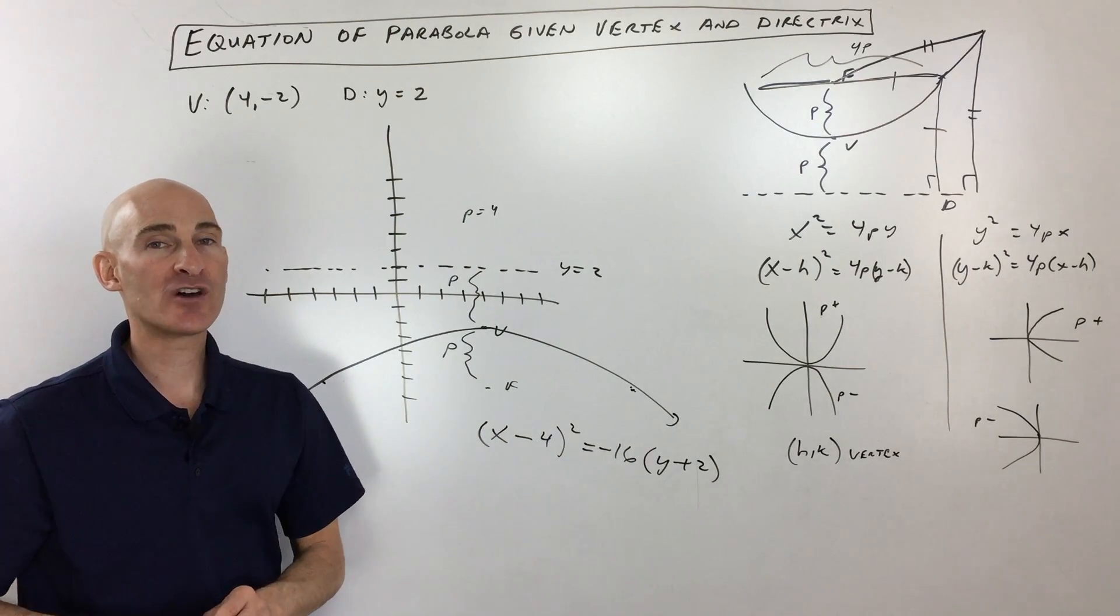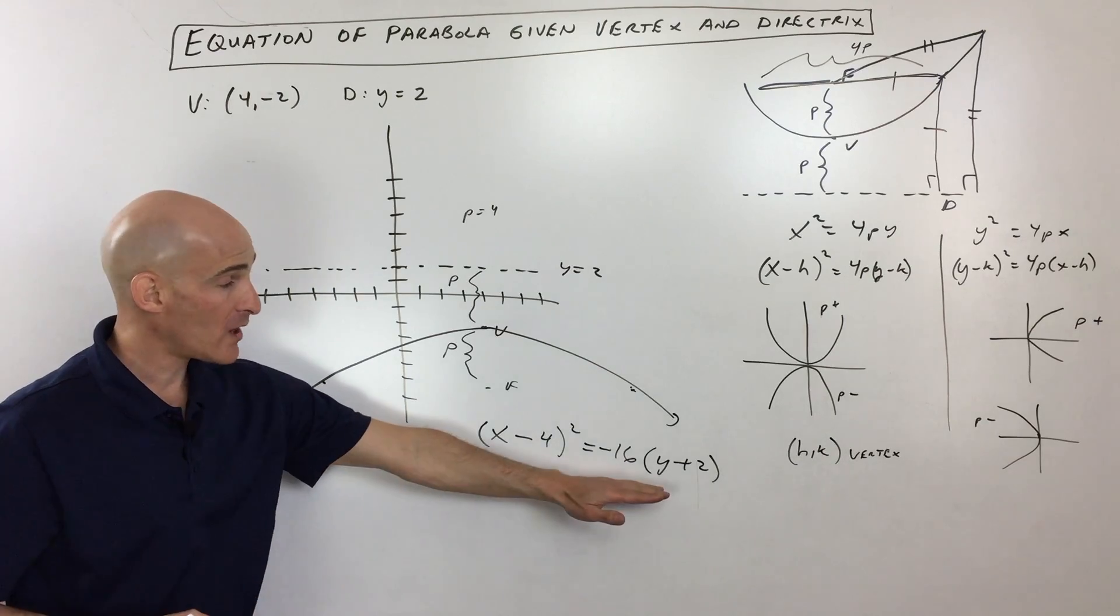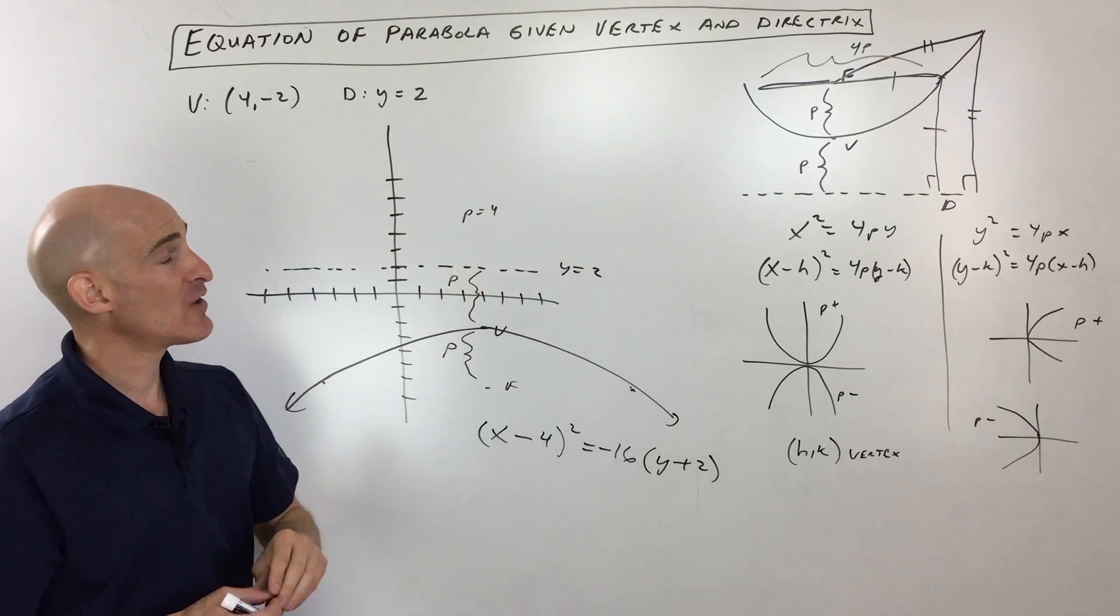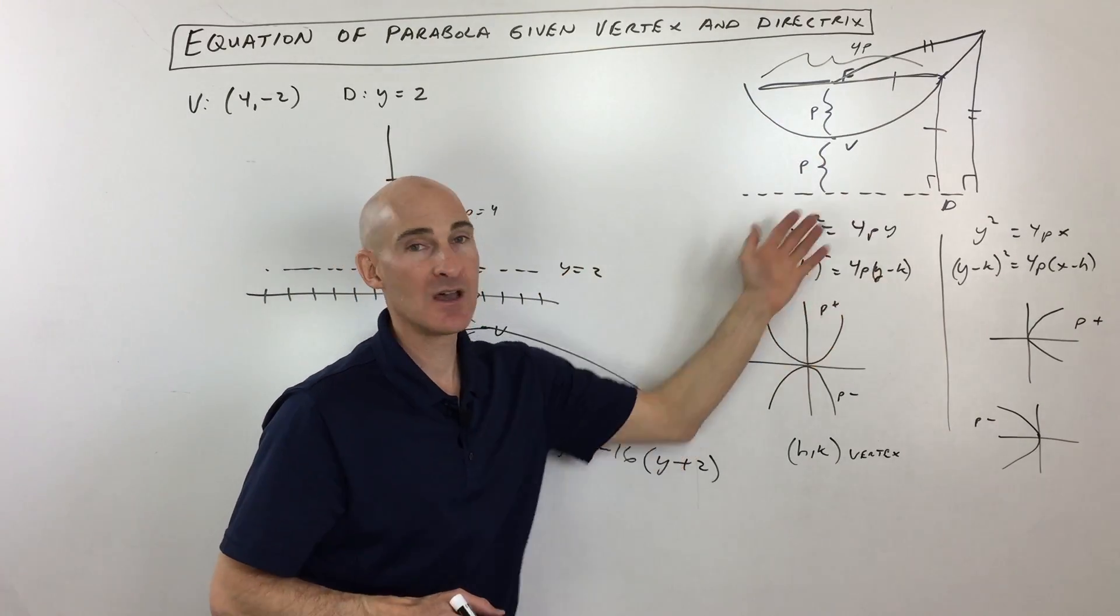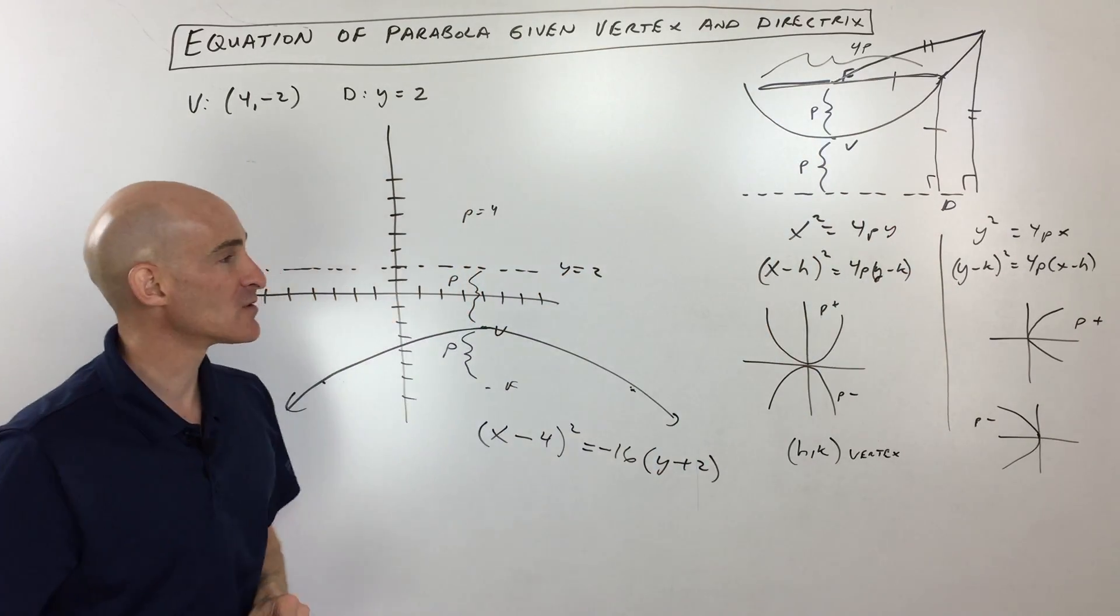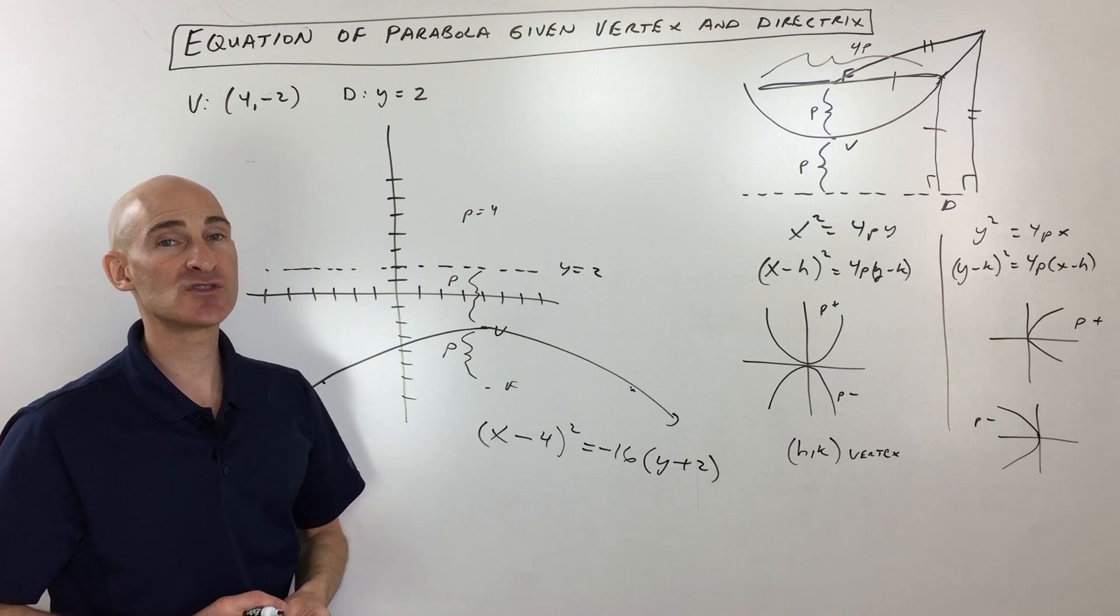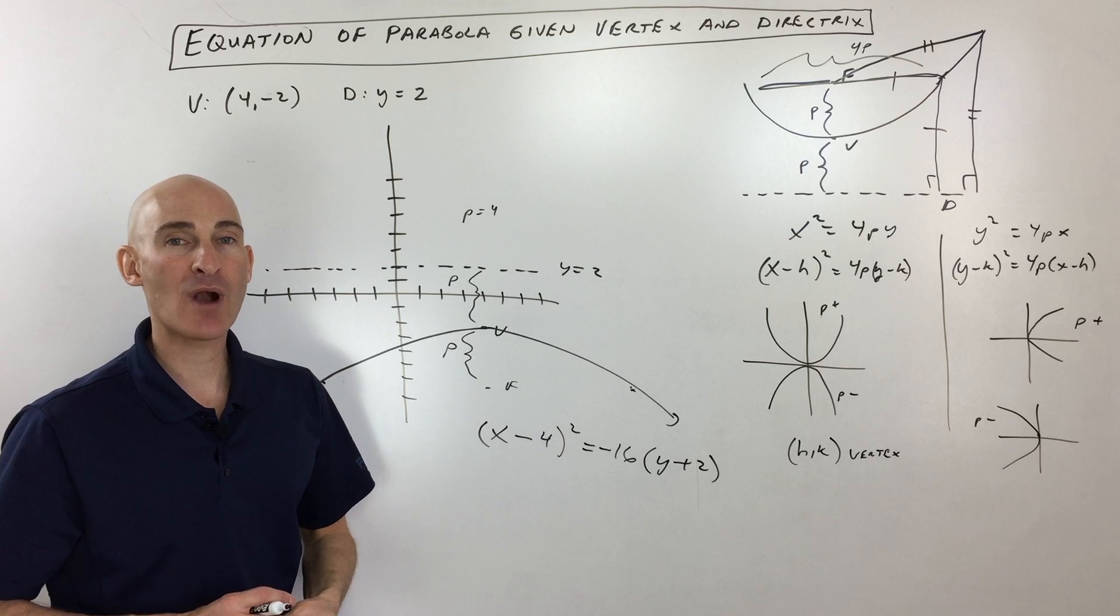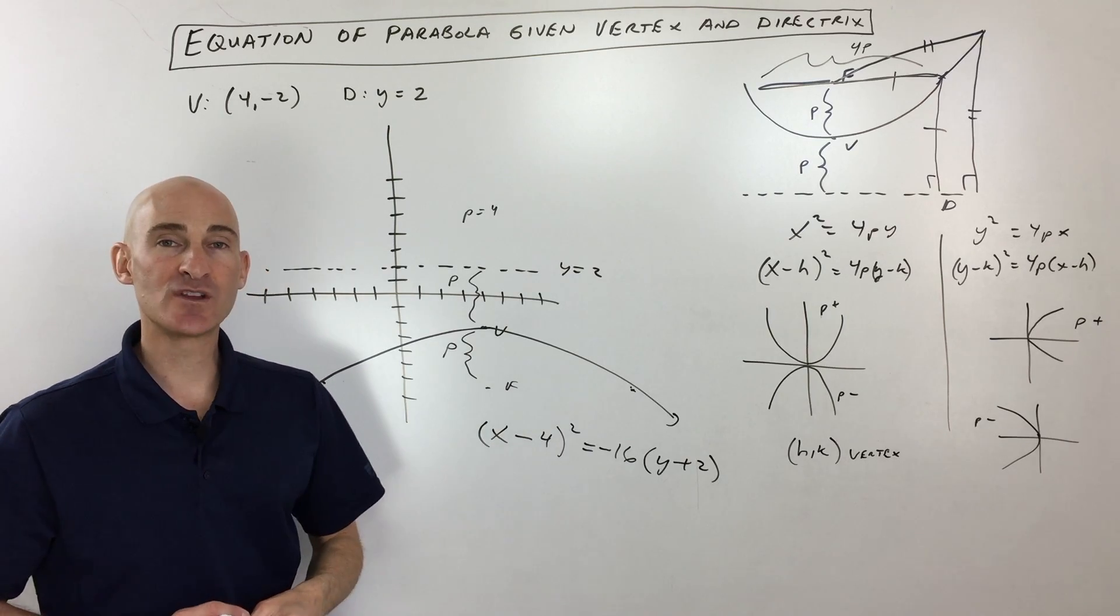So I hope that helped you to understand how to write the equation of a parabola when you're given the vertex and the directrix. If you have more questions about how this whole process works, if there was something that was a little bit confusing there, I'll have links to other videos that I did talking about the introduction and the more basic level problems.